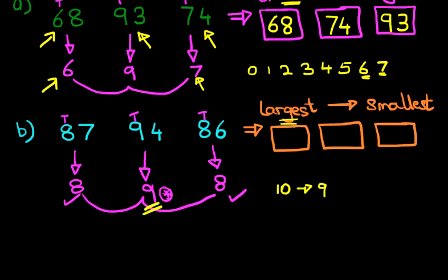That means that this one, which has got nine tens, is the largest number out of the three. Because nine is larger than eight. Do you notice that nine here and eight over here, nine is larger than both of those eights. So the largest number is 94, and we can write that down.